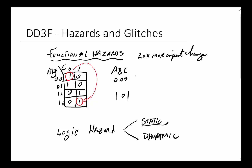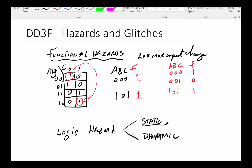If all inputs change simultaneously, the user would see a clean high-to-high output. But what if the inputs do not change at the same time? You start at 0 0 0 with an output of 1. Let's say c changes first — for a moment in time, however short, we will be at 0 0 1, and 0 0 1 gives an output of 0. Then as the next step goes to 1 0 1, you get a 1 again.